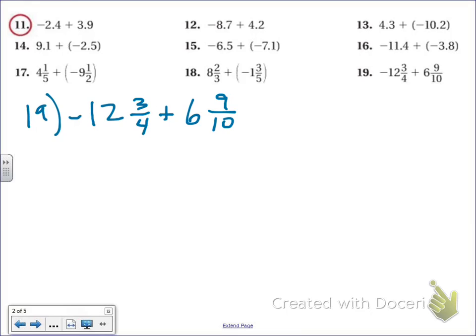All right, so negative 12 and 3 fourths plus 6 and 9 tenths. So when we're adding and subtracting, not when we're multiplying and dividing, but when we add and subtract with fractions, we have to make sure we have a common denominator.